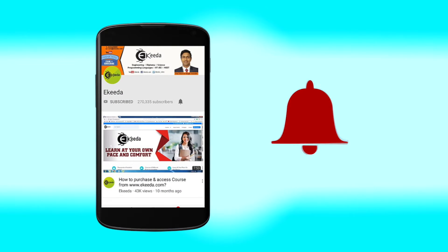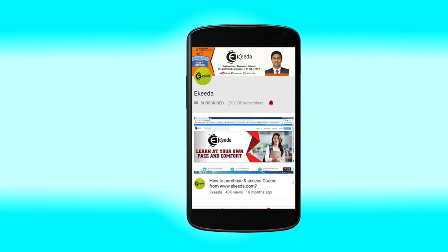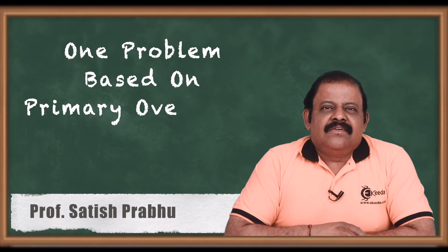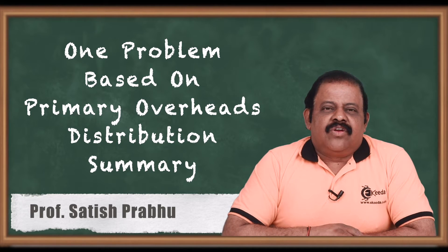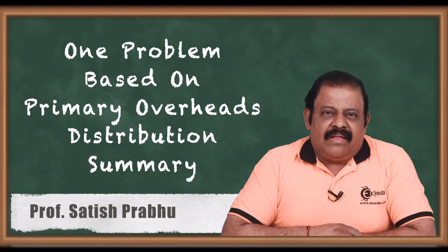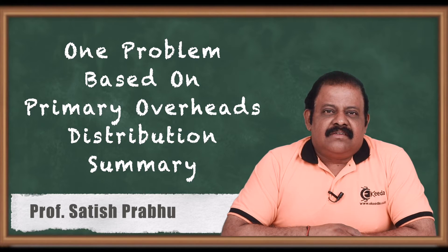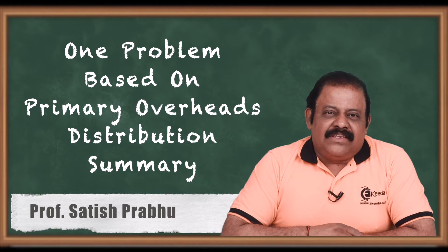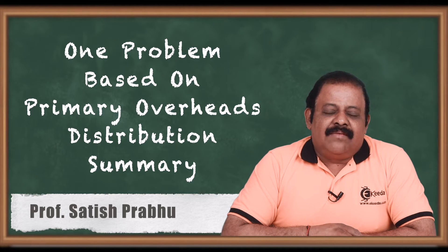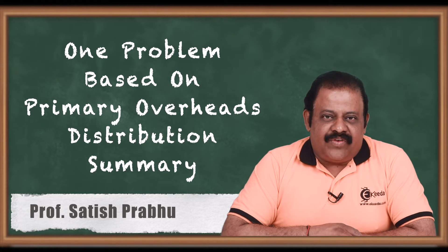Click the bell icon to get the latest videos from Ikeda. Hello friends, we'll be solving a question based on primary distribution of overheads. We need to remember one thing: direct wages of production departments are not overheads, but all expenses of a service department will be treated as overheads. That means direct wages in the case of a service department are also treated as overheads.